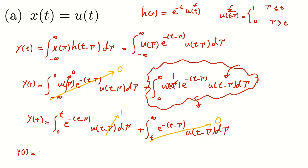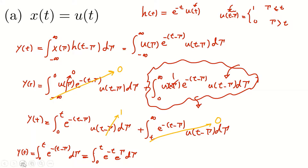So y(t) equals the integral from 0 to t of e^(-(t-τ)) times 1 dτ. I can expand this as the integral from 0 to t of e^(-t + τ) dτ, which equals e^(-t) times the integral from 0 to t of e^τ dτ.